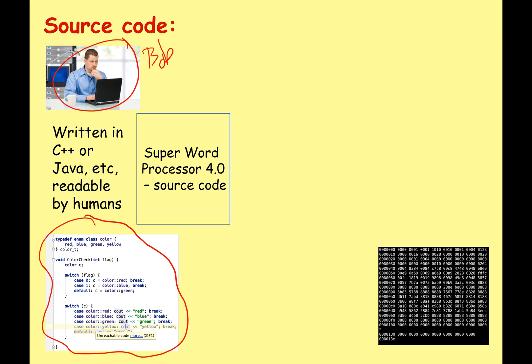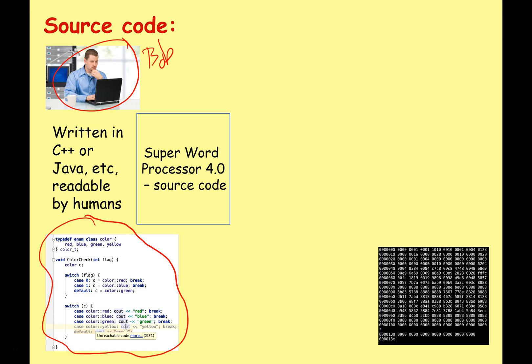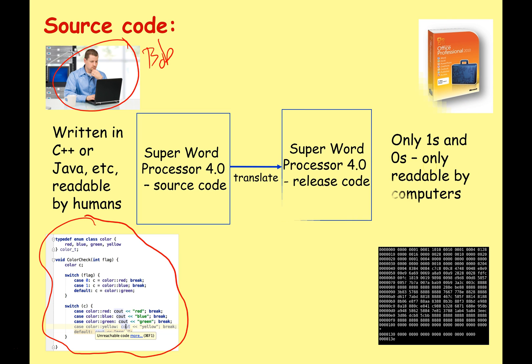However, this is not computer readable. When Bob is finished, he needs to change it into a form that is computer readable — he's going to translate it. Depending on the language, this could be compiled, interpreted, or even assembled, and he's going to get the release code. This is Super Word Processor 4, and now you can go to a shop and buy it on DVD, or you can download it and install it on your computer.